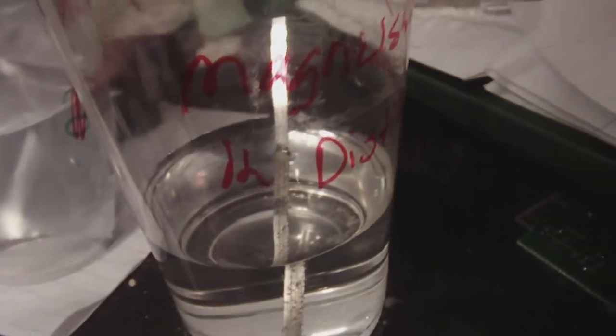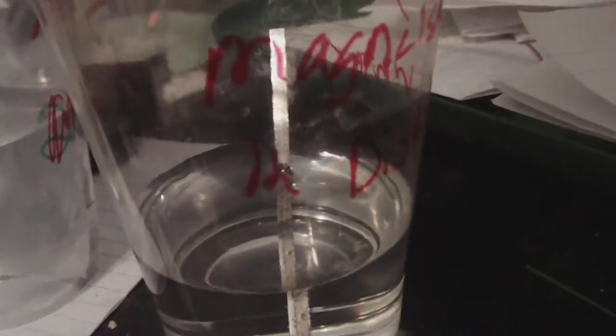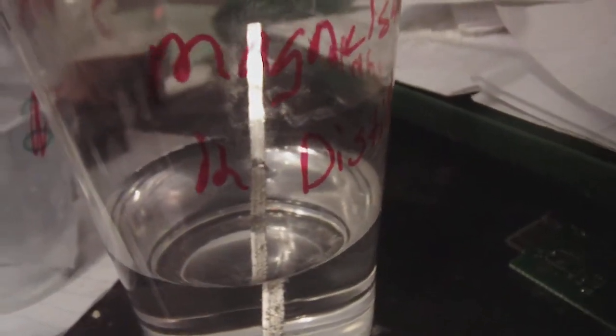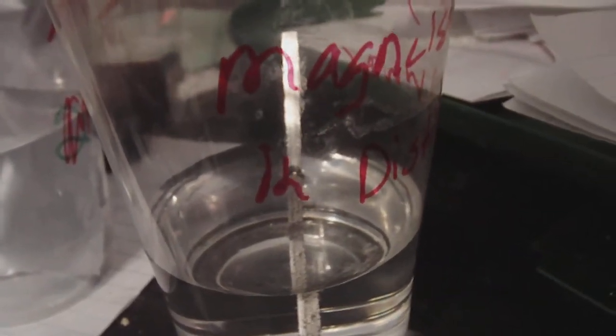I'm doing a simple test here. I have magnesium ribbon right there in distilled water. Very important, distilled water. It's not supposed to be corrosive to anything, but I am proving the fact that it's the water that does the corroding. So if you stay away from water, you can have a battery that will last for a really long time.